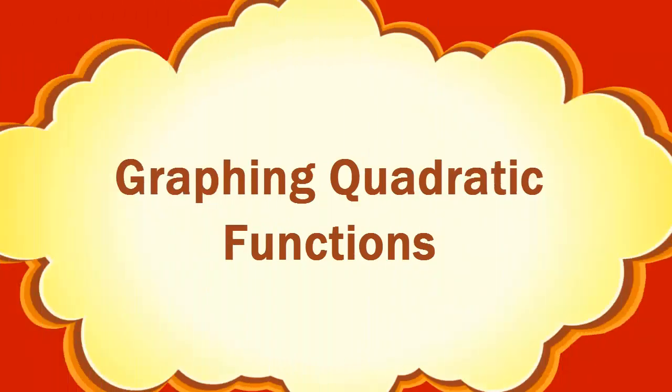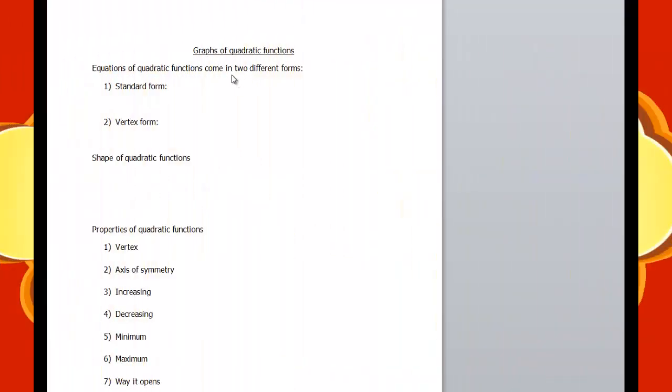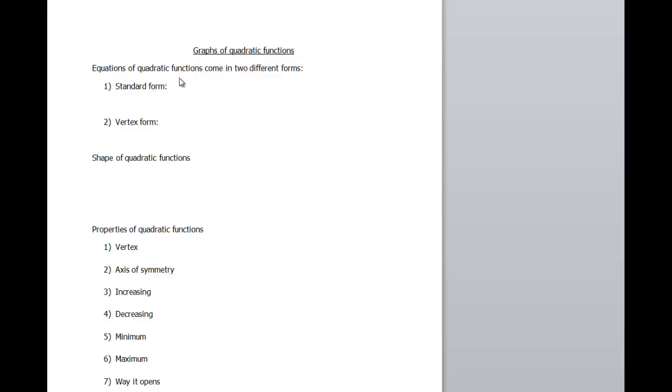Welcome to a video today on graphs of quadratic functions. Quadratic functions come in two different forms. One is called the standard form. That form looks like f(x), or y if you want to write it that way, equals ax² + bx + c. The squared form here, you notice that's different than lines. Lines would just be the bx + c part, but now quadratics has a new term to it.